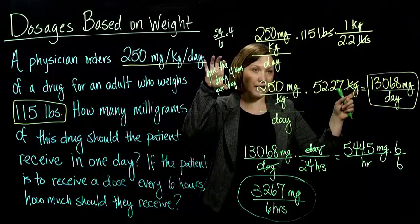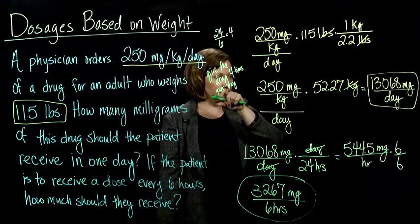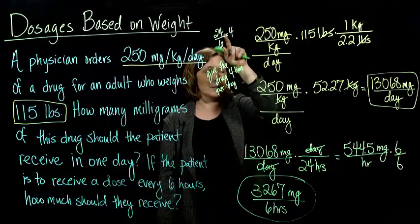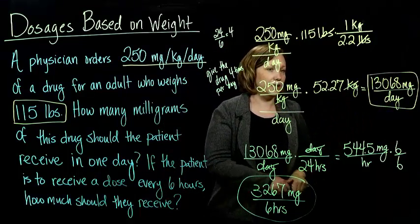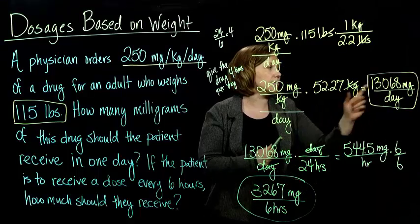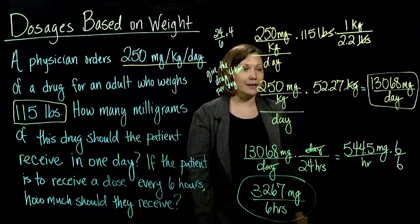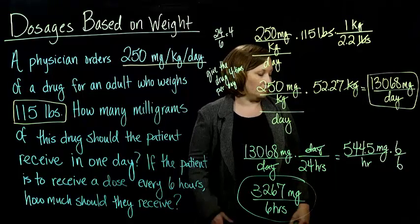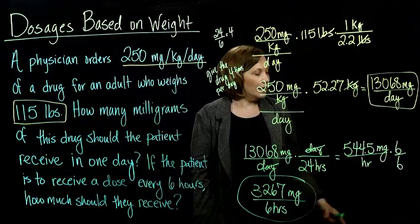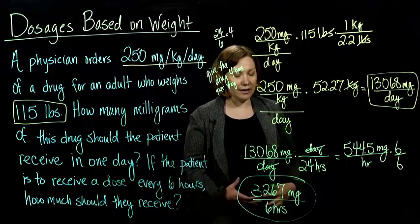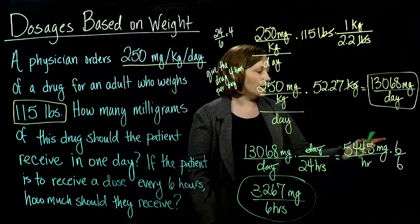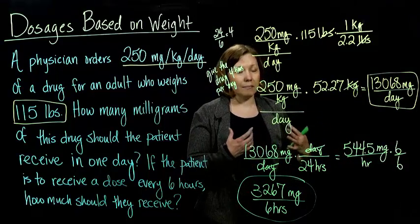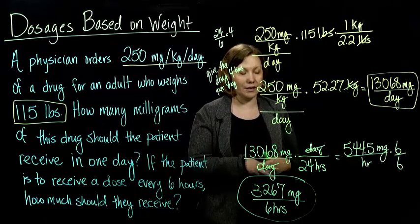So it's 3,267 milligrams per every 6 hours, or 13,068 per day. And if you had gone the other route — figuring out how many times per day by dividing 24 by 6 and then dividing the daily dose into 4 equal parts — you would get the exact same answer. Either way, however you wrap your brain around it, both ways work equally well. This approach is nice because it allows us to practice our dimensional analysis and understand that these dosage calculations are really just math that follows all the rules you already know.